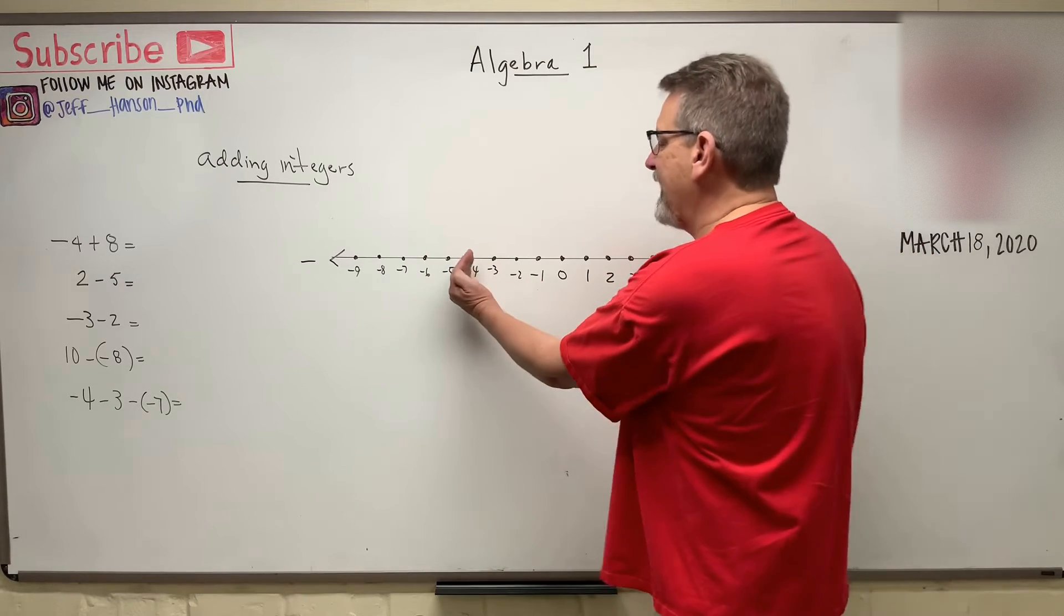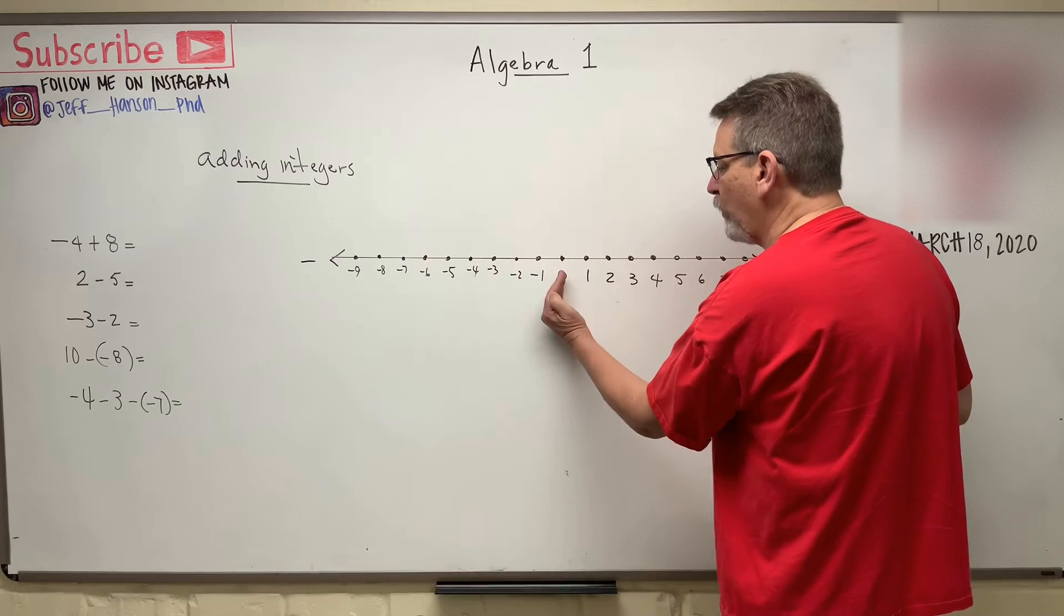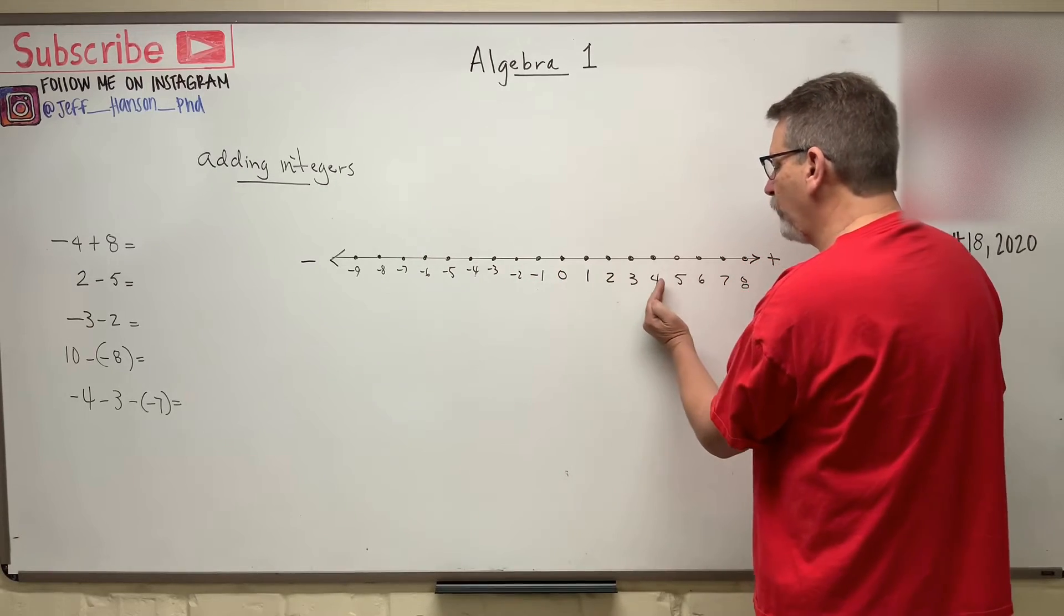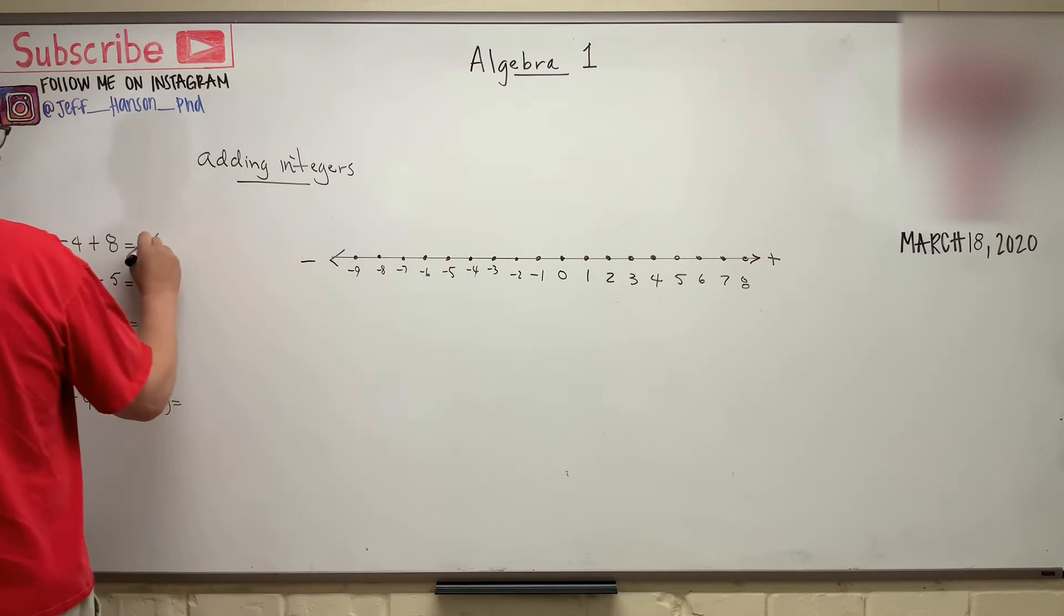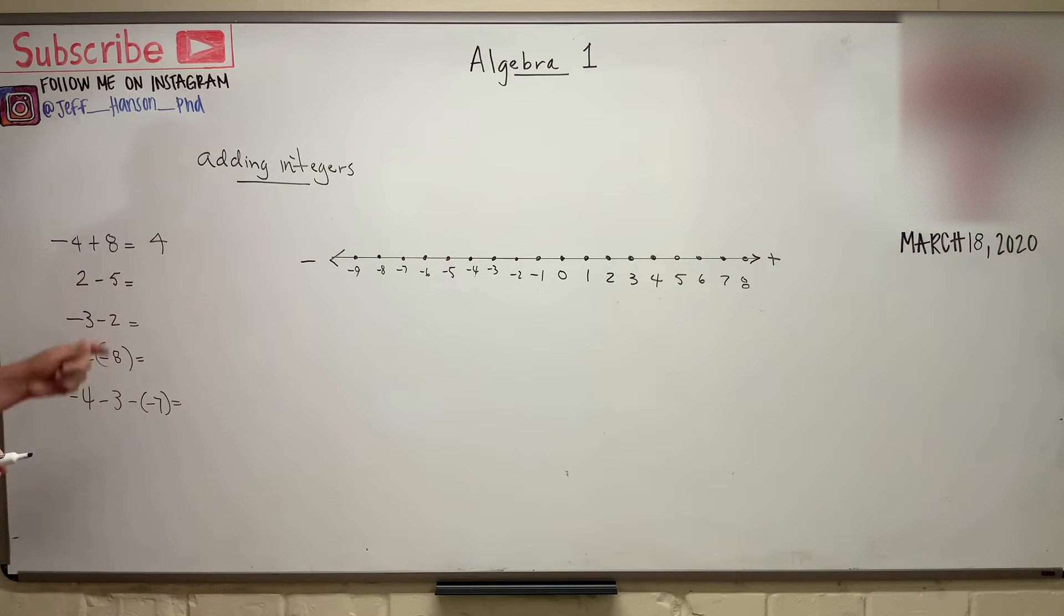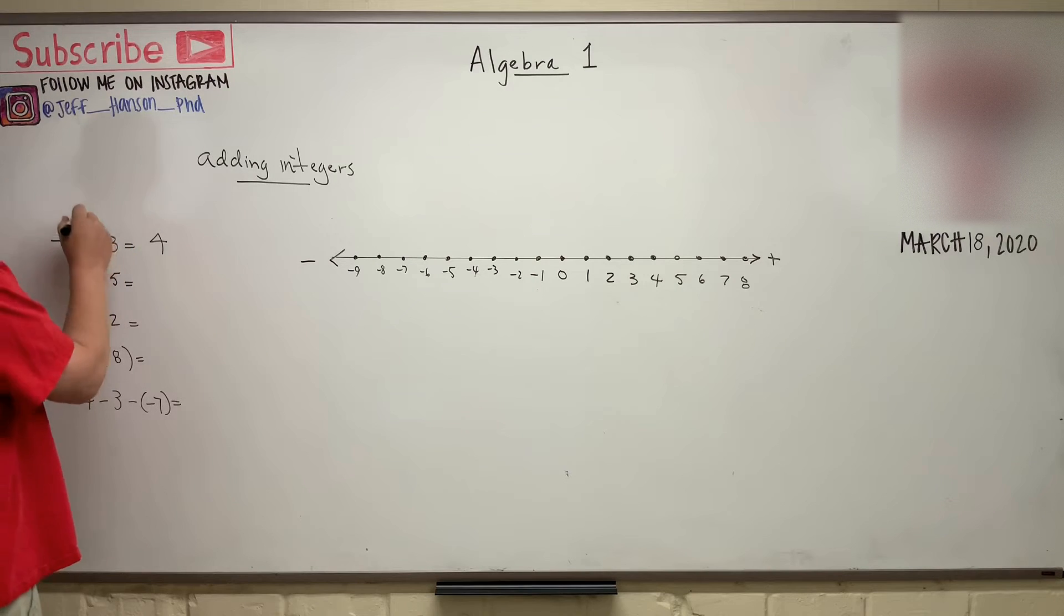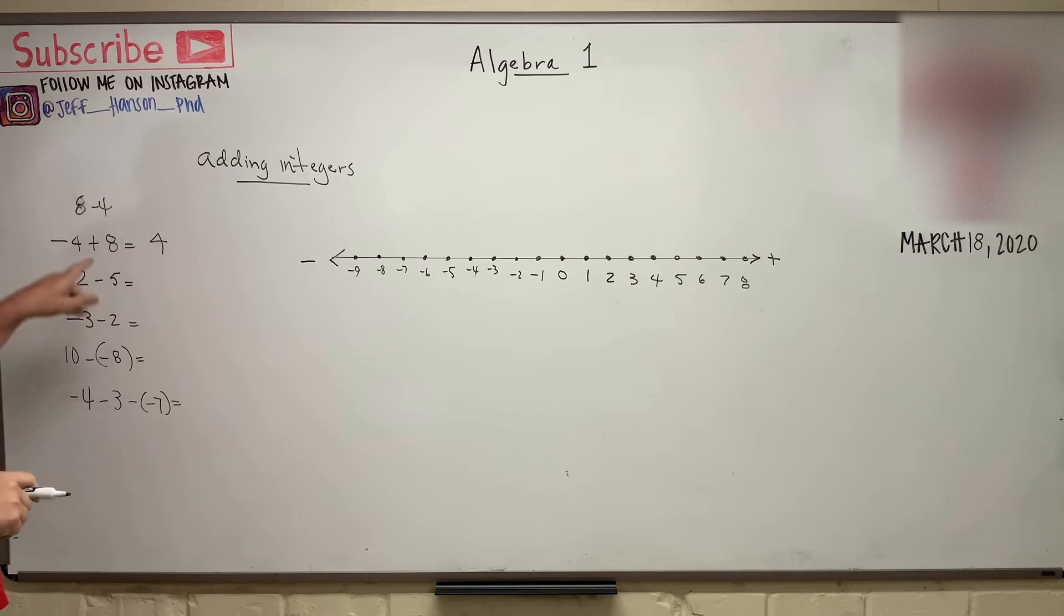So if I'm at negative four and I add eight to that, that's one, two, three, four, one, two, three, four. That's going to put me at positive four. So the answer there is positive four. And of course, you can rearrange that. Instead of doing negative four plus eight, you can do eight minus four. That's the same thing, and we all know that eight minus four is equal to four.